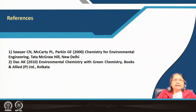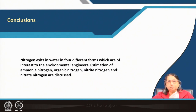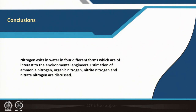As references I recommend the Sawyer-McCarty book and A.K. Das's Environmental Chemistry with Green Chemistry. In conclusion, this lecture has shown that nitrogen exists in water in four different forms of interest to environmental engineers: ammonia nitrogen, organic nitrogen, nitrite nitrogen, and nitrate nitrogen. Their estimation methods have been discussed, covering the analytical chemistry needed to quantify different types of nitrogen in water samples. Thank you.